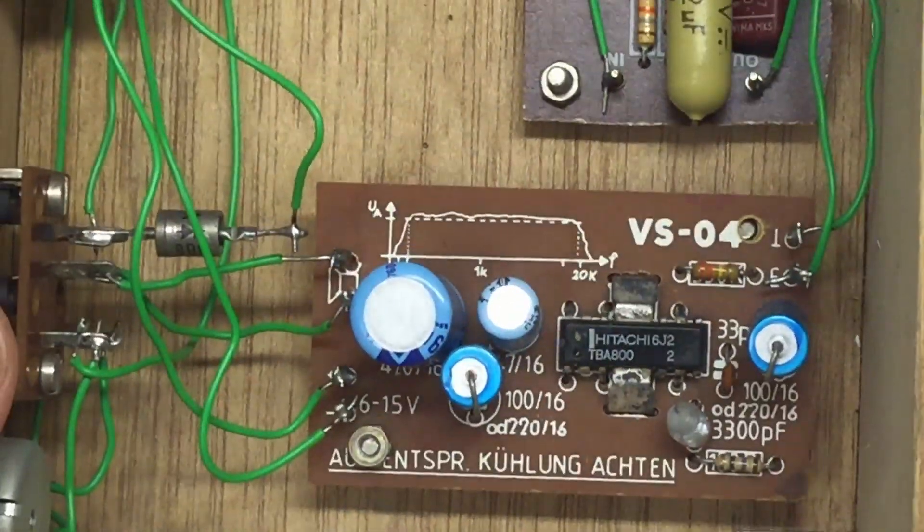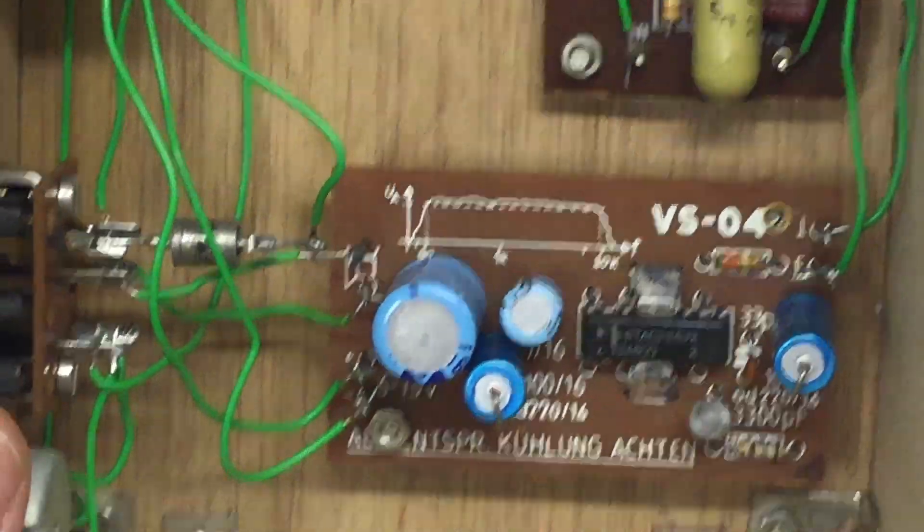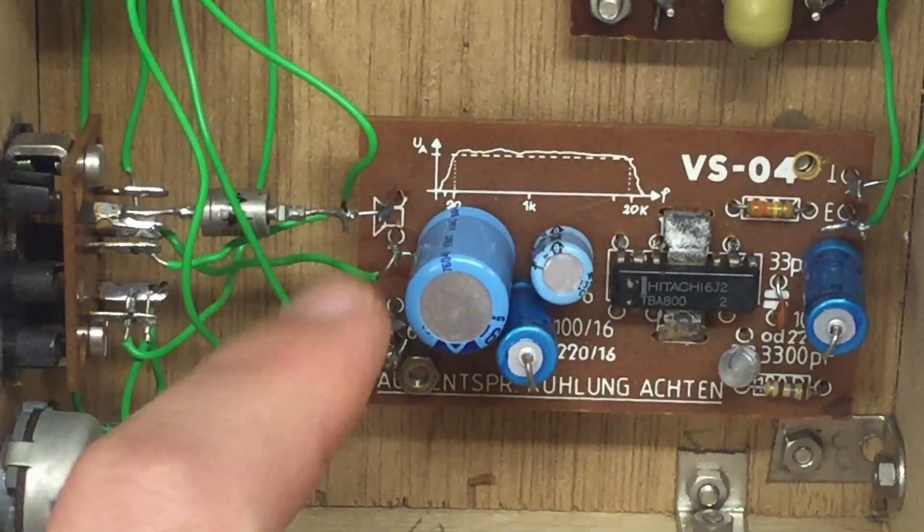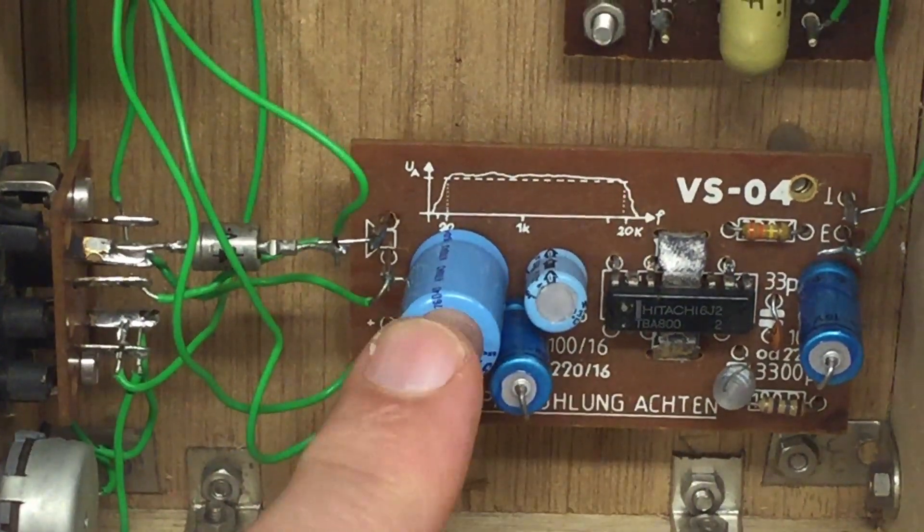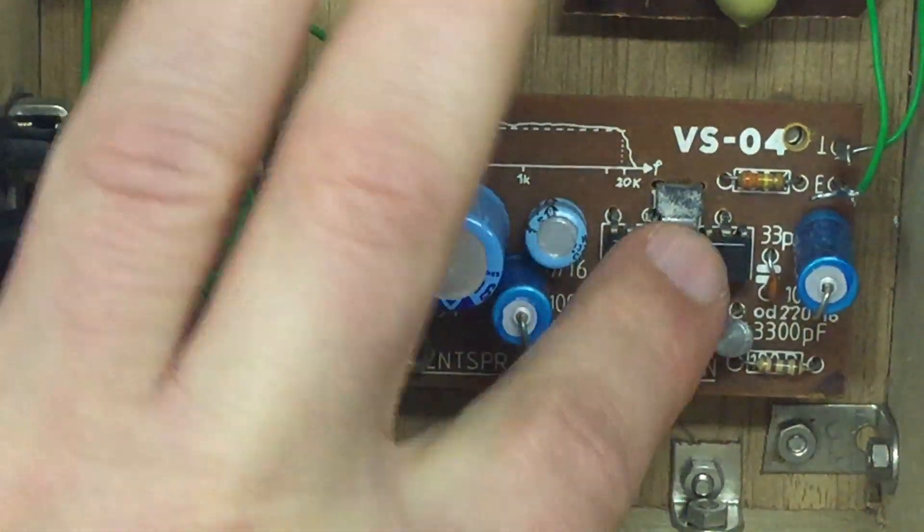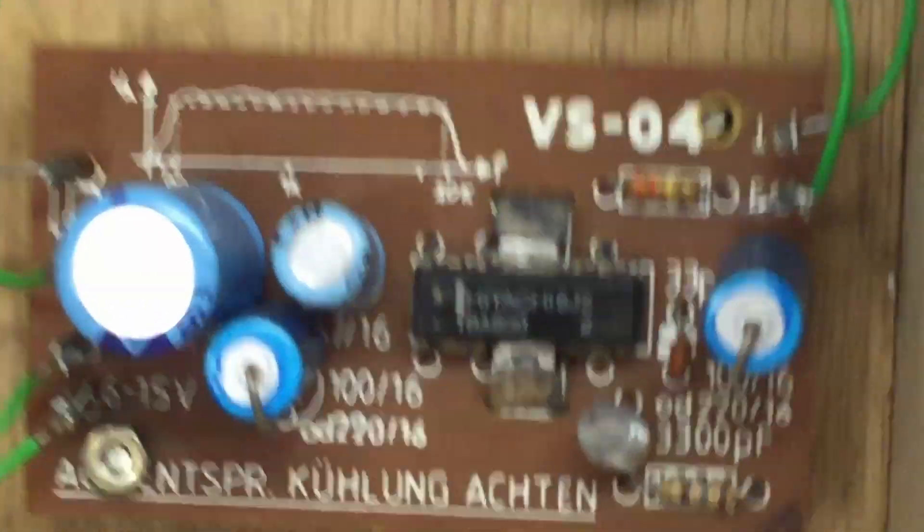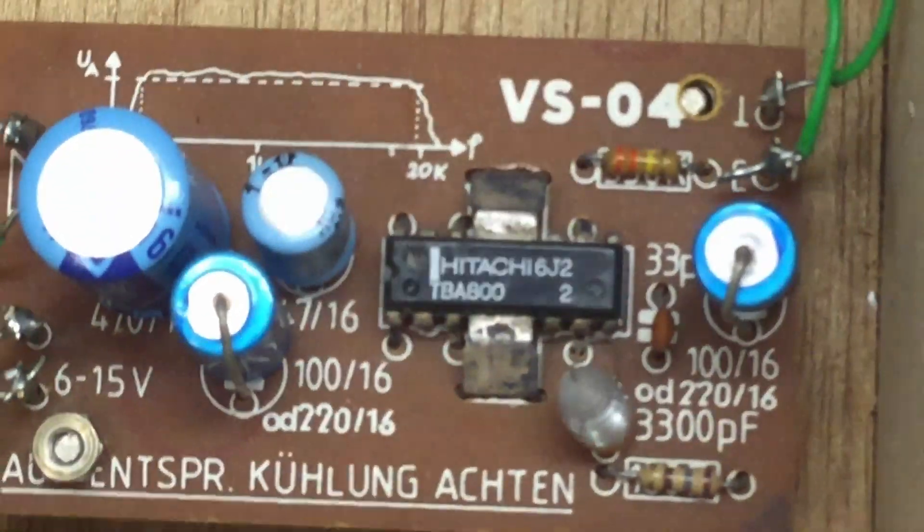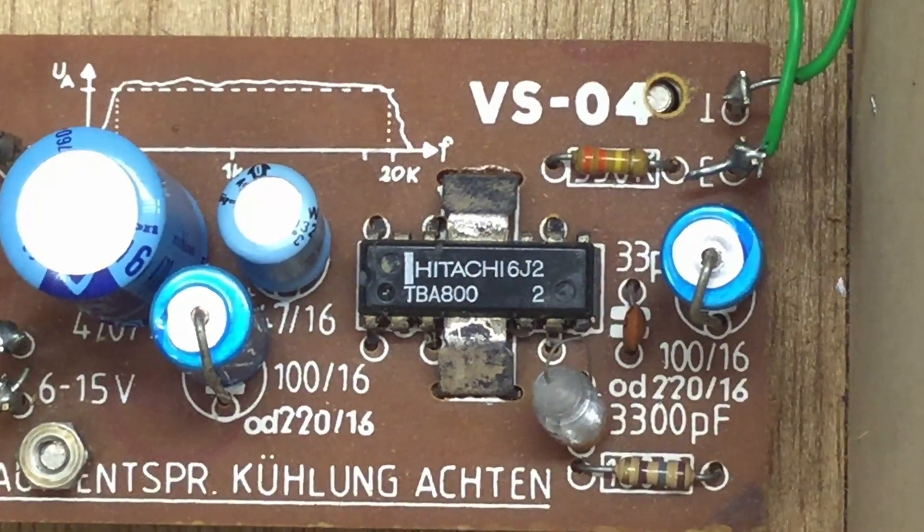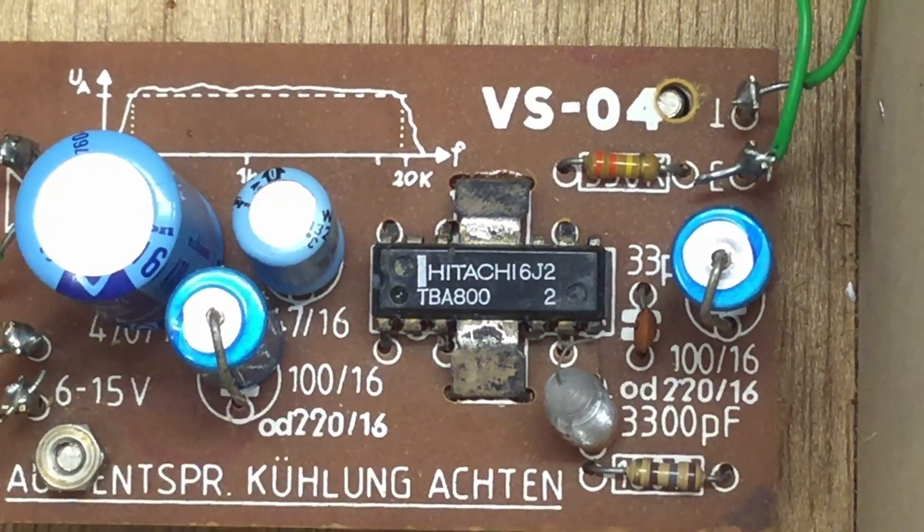And we have this nice audio amplifier. We saw that curve, it's obviously working from I guess 20 to 20 kilohertz, of course. It has a nice Hitachi chip here, can I get a focus? A TBA 800.